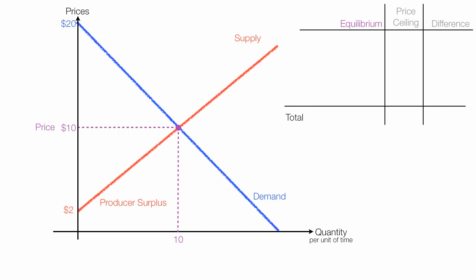Producer surplus is the area above the supply curve and below price, this red area. And if you recall, the area of a triangle is base times height. So the height of the triangle is 10 minus 2 or 8. The base is 10, that distance right there. The area is 1/2 base times height, which is 1/2 times 10 times 8, and this is equal to 40, and that's producer surplus at equilibrium.